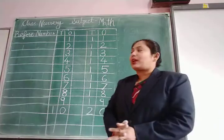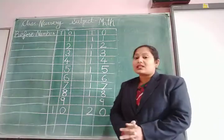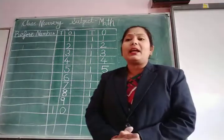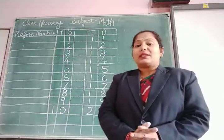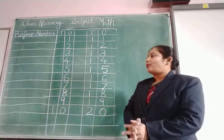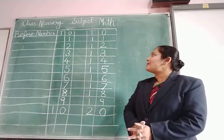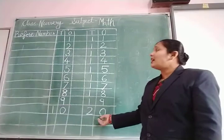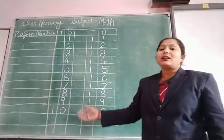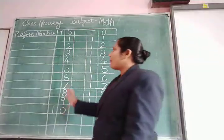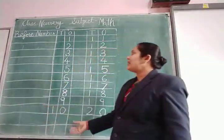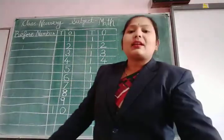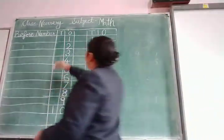तो आज हम before number concept ले रहे हैं, हम इसे revise कर रहे हैं। तो आपको क्या करना है सबसे पहले? अपनी notebook में 1 से लेकर 20 तक numbers लिखना है। आप अपनी notebook को दो part में divide करके, पहले writing number 1, 2... यह आपका writing part है।